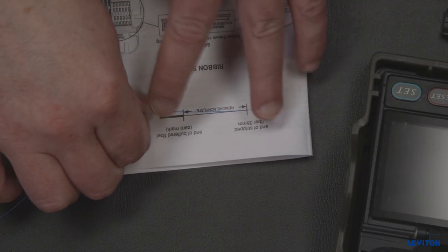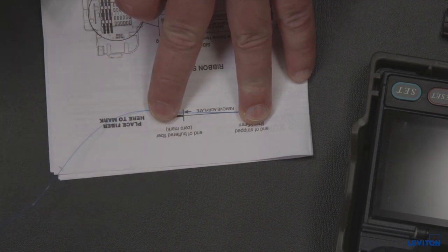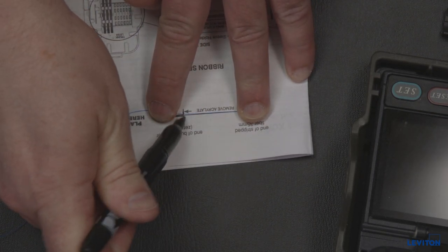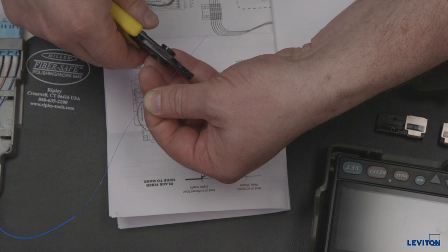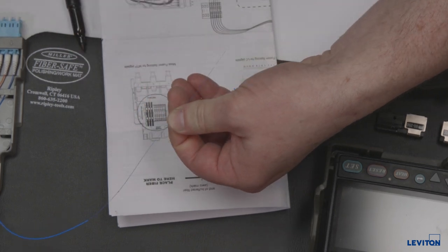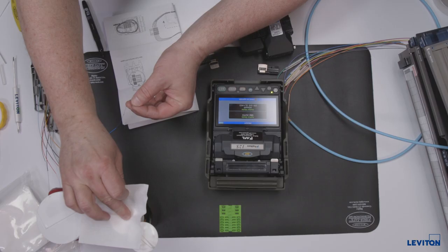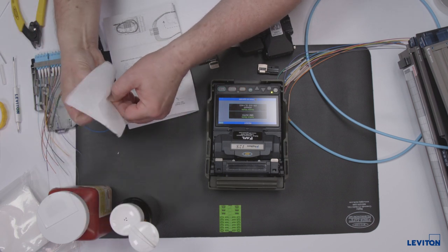Using the marking guide on the provided instruction sheet, shorten all fibers to 30 to 35 millimeters to the zero mark. Strip all the tight buffer coating, loose tubing or coatings, and the acrylite back to the zero mark of both fibers to be fused.